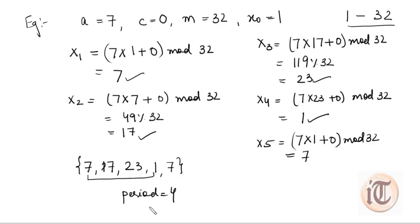This is how we use the LCG algorithm — the Linear Congruential Generator — to calculate pseudo random numbers. If you have any doubts, you can ask in the comment section. In my next video, I am going to discuss the next algorithm for pseudo random number generation, that is BBS. So keep watching. Thank you so much.